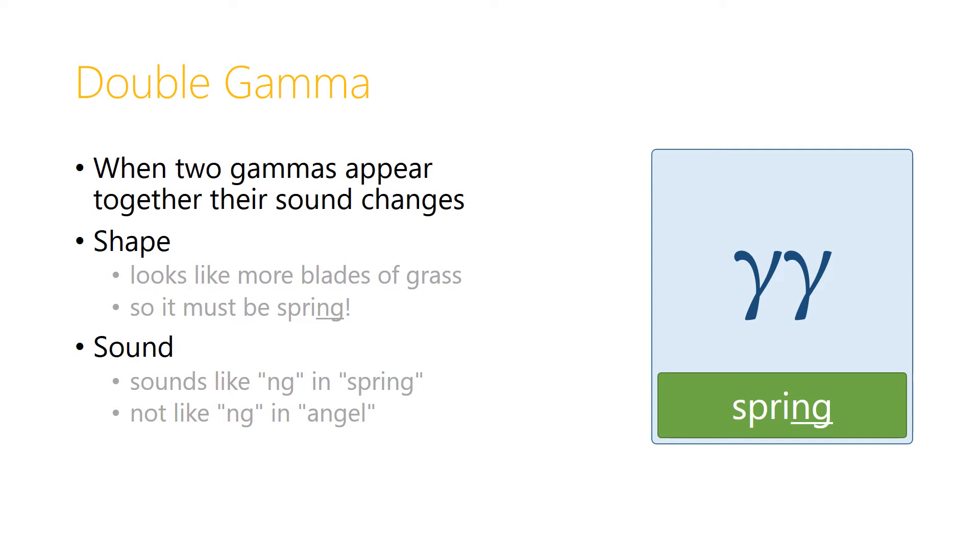There are a couple of oddities about the letter gamma. One is that when two gammas appear together, their sound changes. The shape looks a little bit more like more great blades of grass springing up, so it must be spring!